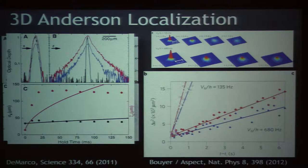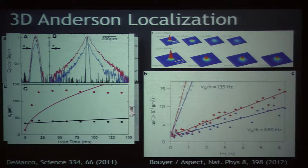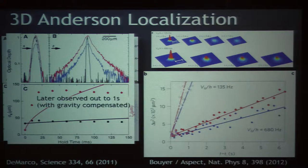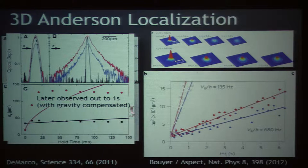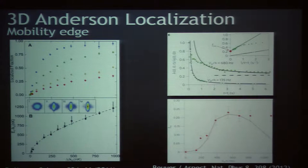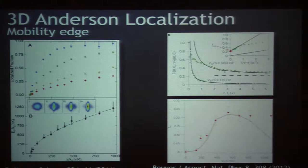So that's the picture for what's happening in these 3D localization experiments. These are some of the observations. We later saw this go out to seconds, and it's important to keep in mind that this was observed out to many seconds. Both experiments also measured mobility edges, as has another group now.